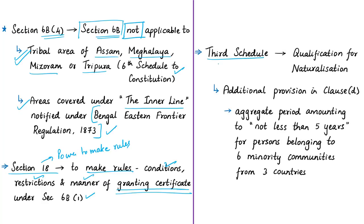The amendment also amends the Third Schedule of the 1955 Act, which provides qualifications for naturalization. It should be noted that the relevant clause is not removed or totally amended; rather, another provision is being inserted alongside it. This provision is for persons who will be granted citizenship by naturalization based on this amendment.